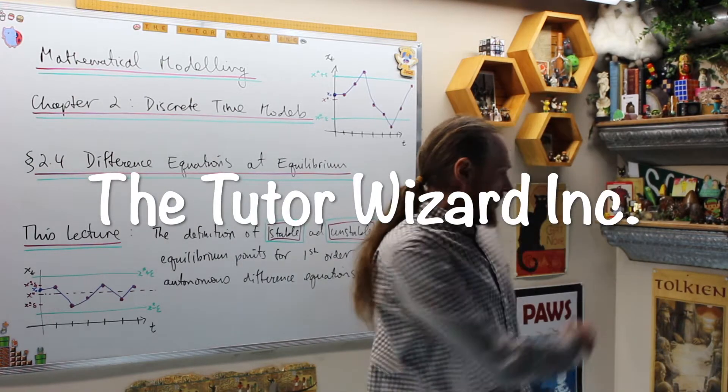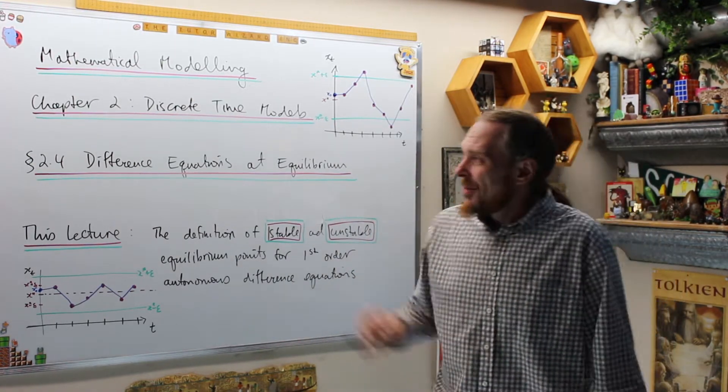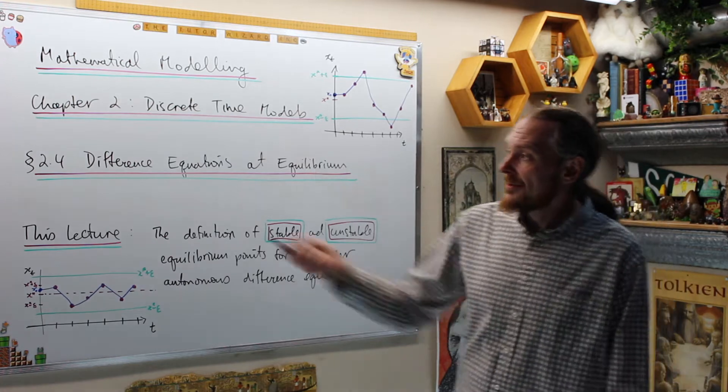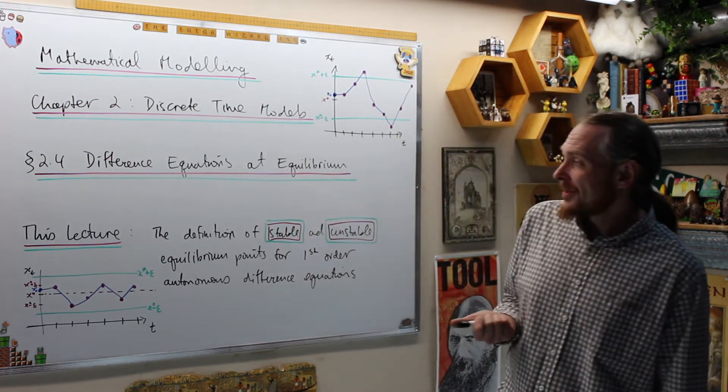Welcome back, this is the Tudor Wizard. I'm Adrian. Please subscribe right here. We're doing mathematical modeling. Chapter 2 is discrete time models. Section 2.4 is going to be difference equations at equilibrium.